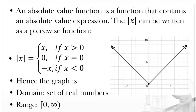Let's proceed to absolute value functions. An absolute value function is a function that contains an absolute value expression. The absolute value of x can be written as a piecewise function: the absolute value of x equals x if x is greater than 0, equals 0 if x equals 0, and equals negative x if x is less than 0.